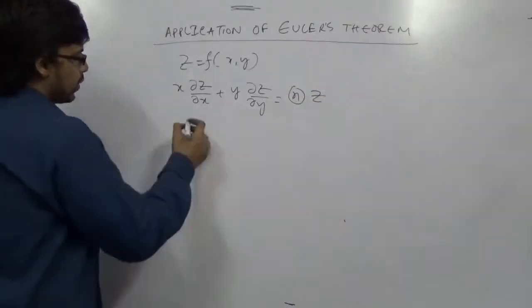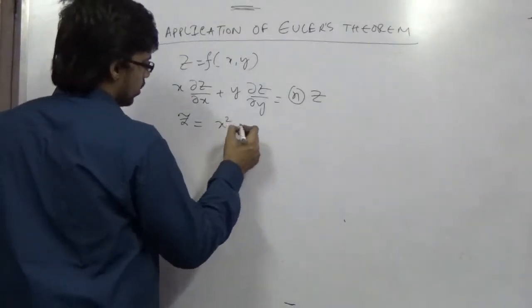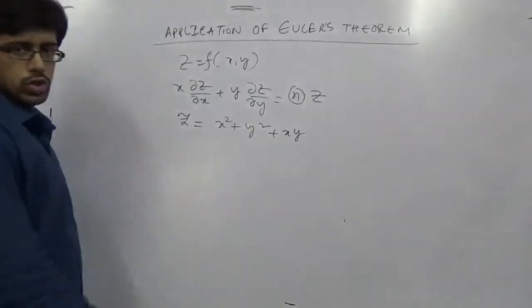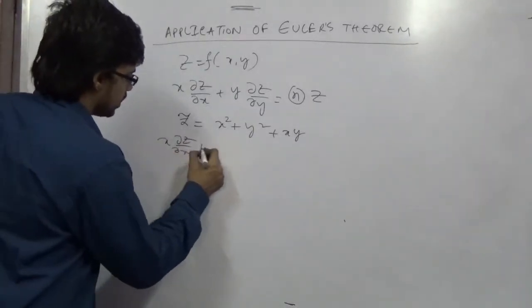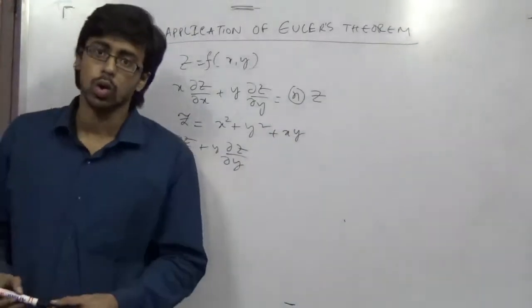Now I am giving you a proper example: z equals x squared plus y squared plus xy. So here if they ask you to find x times del z del x plus y times del z del y without doing all the differentiation, you can directly find it. How?